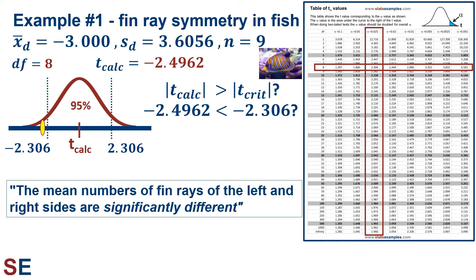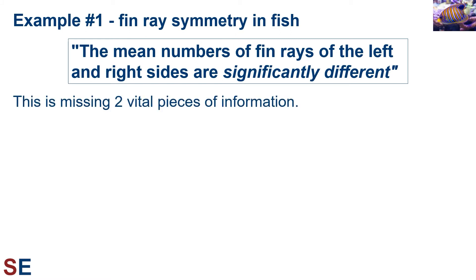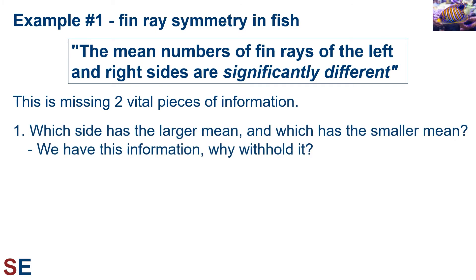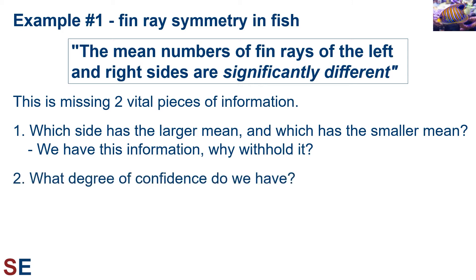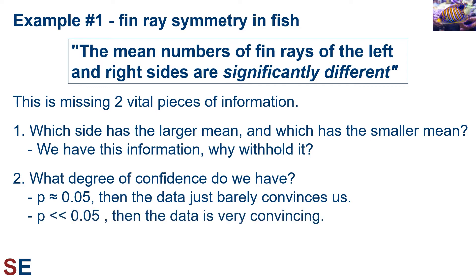We can say the mean numbers of fin rays on the left and right sides are significantly different. But we can do better — we should state which side has the larger mean and what degree of confidence we have. We know the p-value is less than 0.05, but if it's only slightly less, the data just barely convinces us. If the p-value is very small, the data is very convincing. Extremely small p-values provide the evidence to make important decisions.